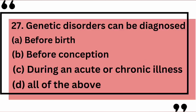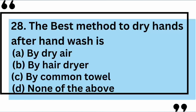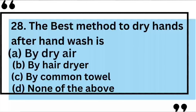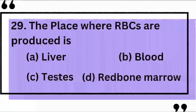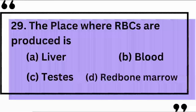Genetic disorders can be diagnosed — yes, the correct answer is D: all of the above. The best method to dry hands after handwashing — yes, the correct answer is A: by dry air. The place where RBCs are produced is — the correct answer is D: red bone marrow.